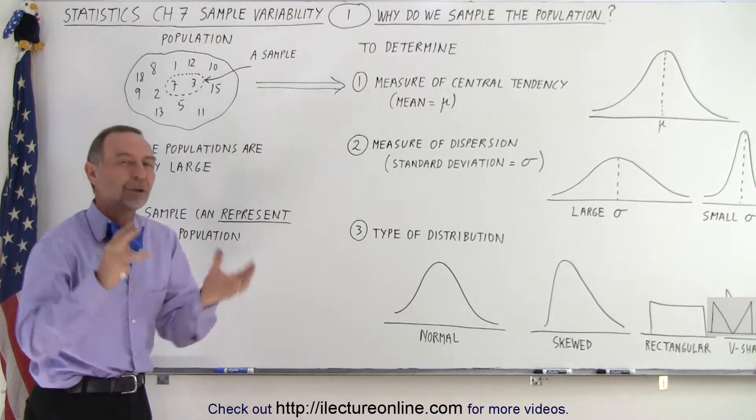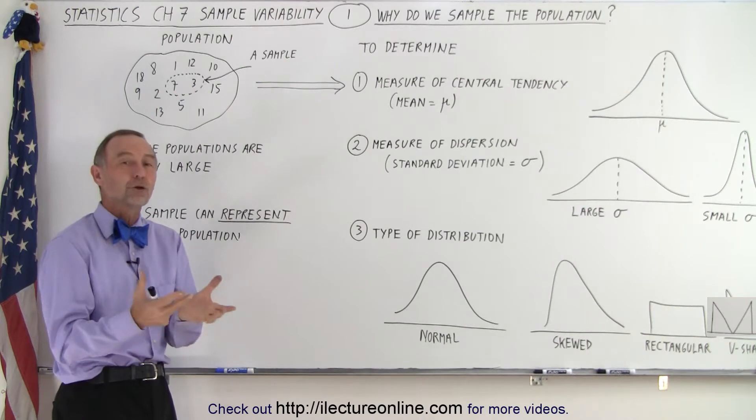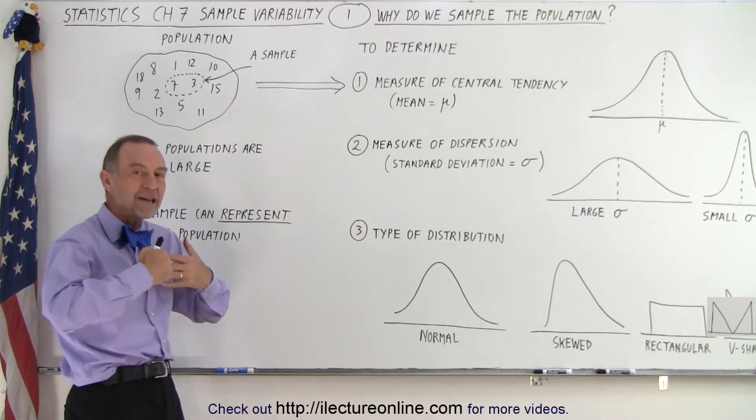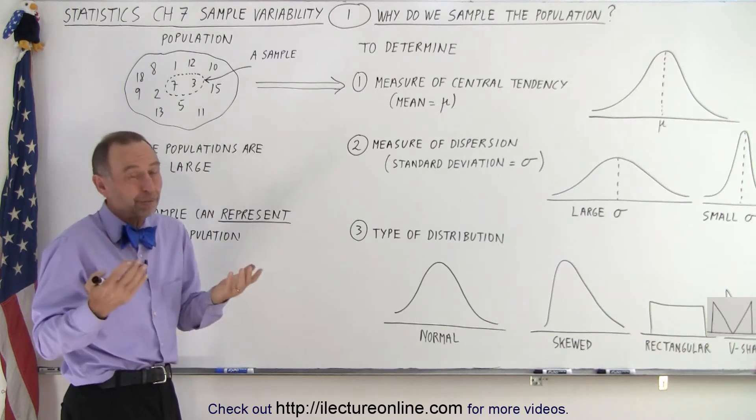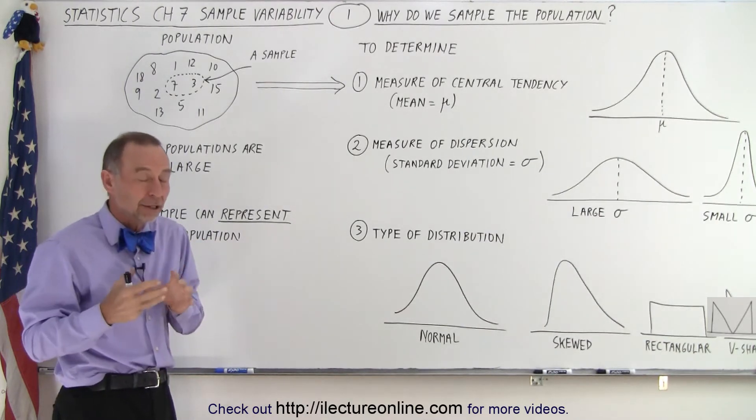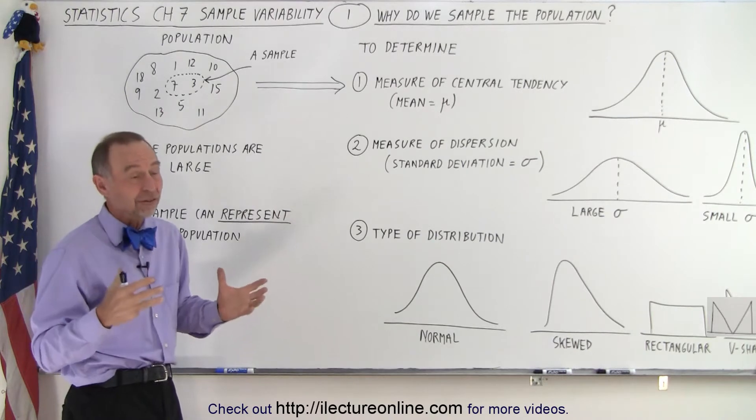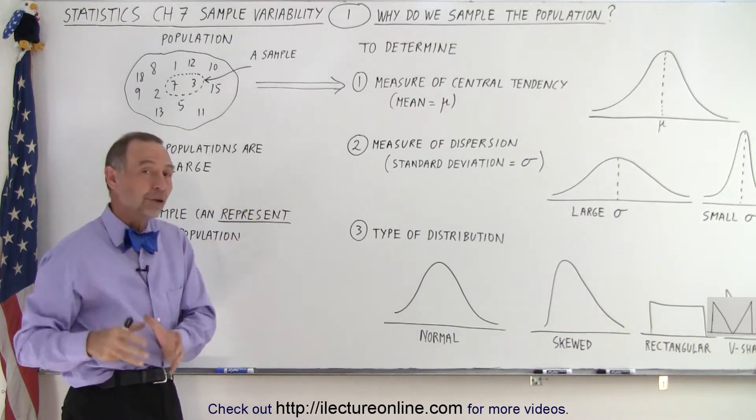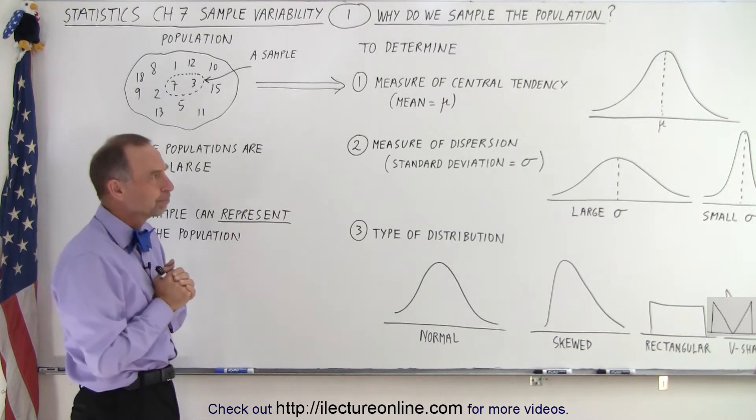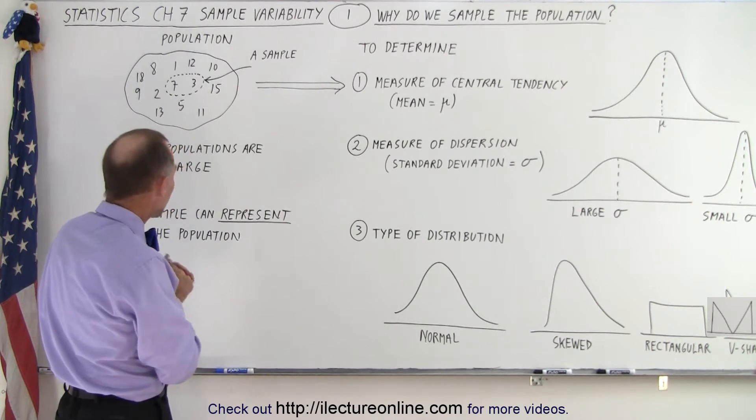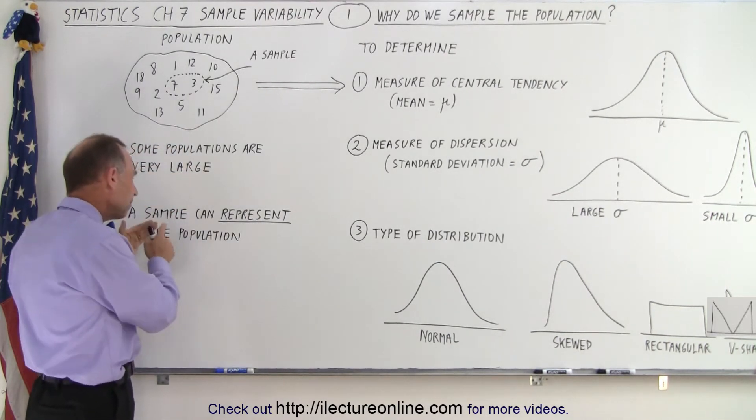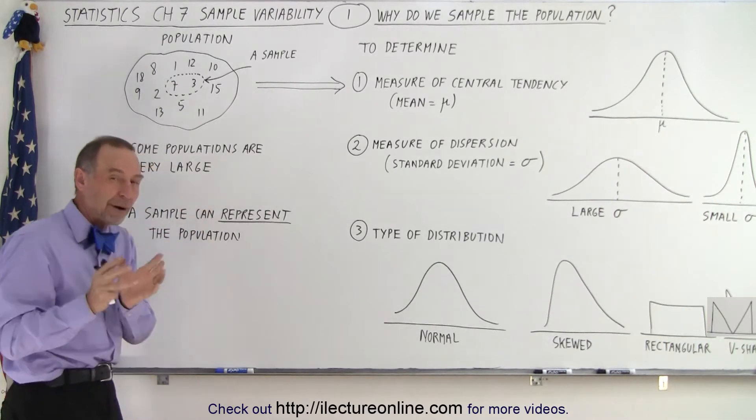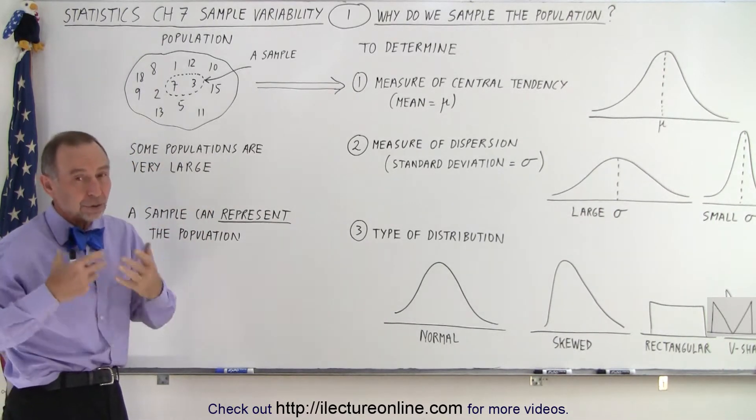So we may want to sample the population, take a small number of the total and then make inferences on the total population. So that's why we sample. But of course there's going to be sample variability depending upon how large your sample size is and whether or not we picked the right portion of the population. We have to remember that population is very large, but a sample has the capability of representing the population if we do things right.